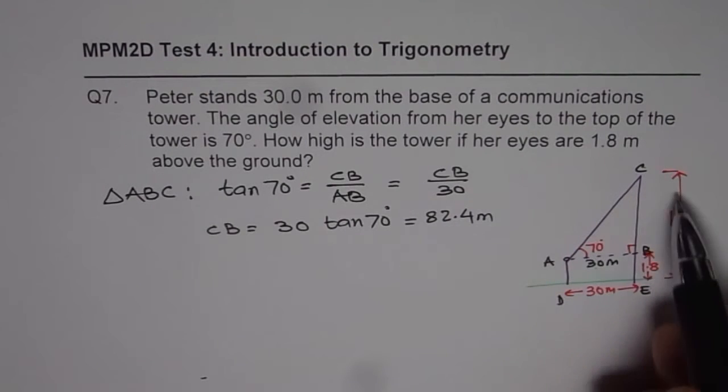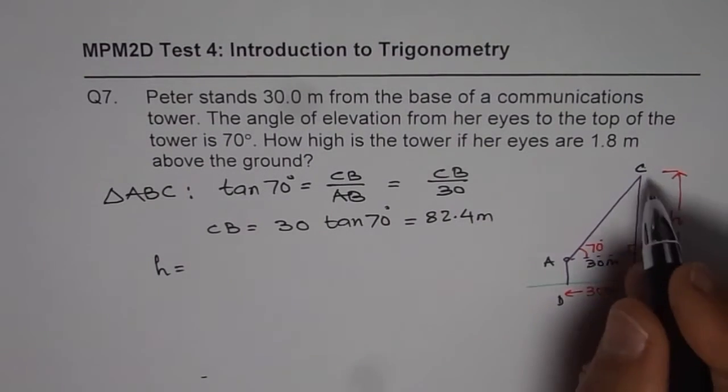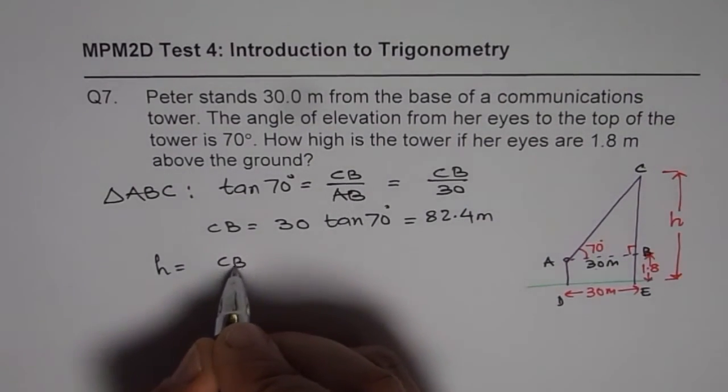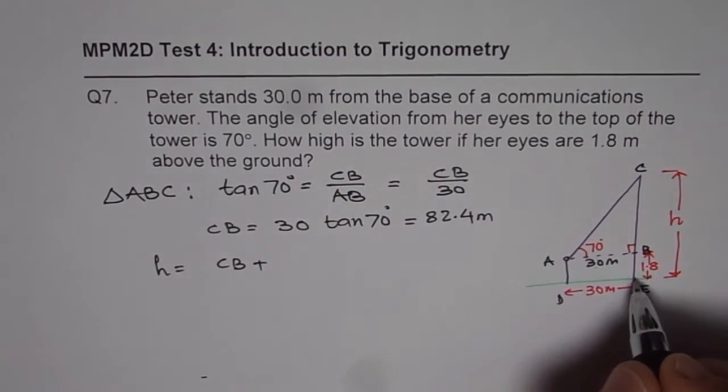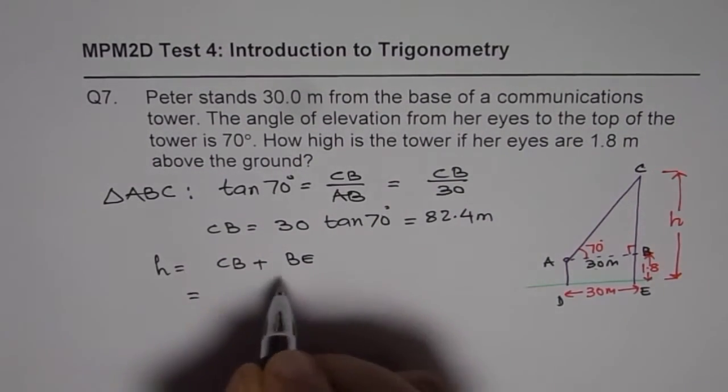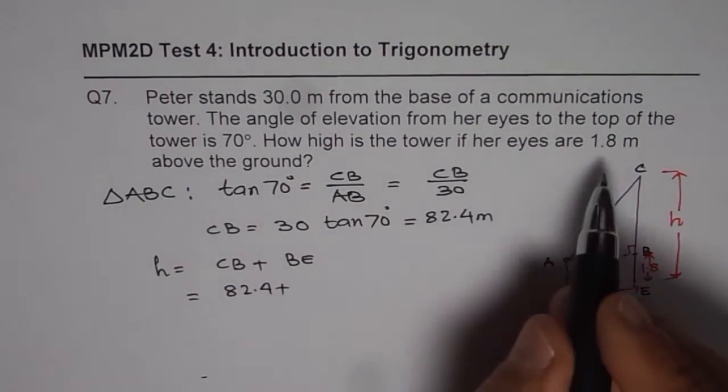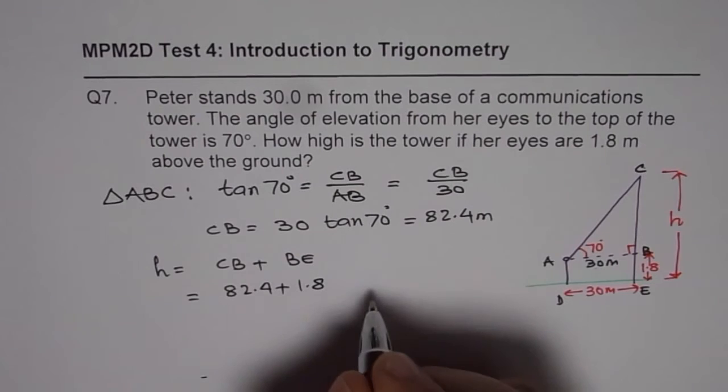So now we know CB. To find the height of the tower H, which is equal to CB plus the height of Peter, which is 1.8, which is BE in this case. We can say CB is 82.4 plus BE which is 1.8.